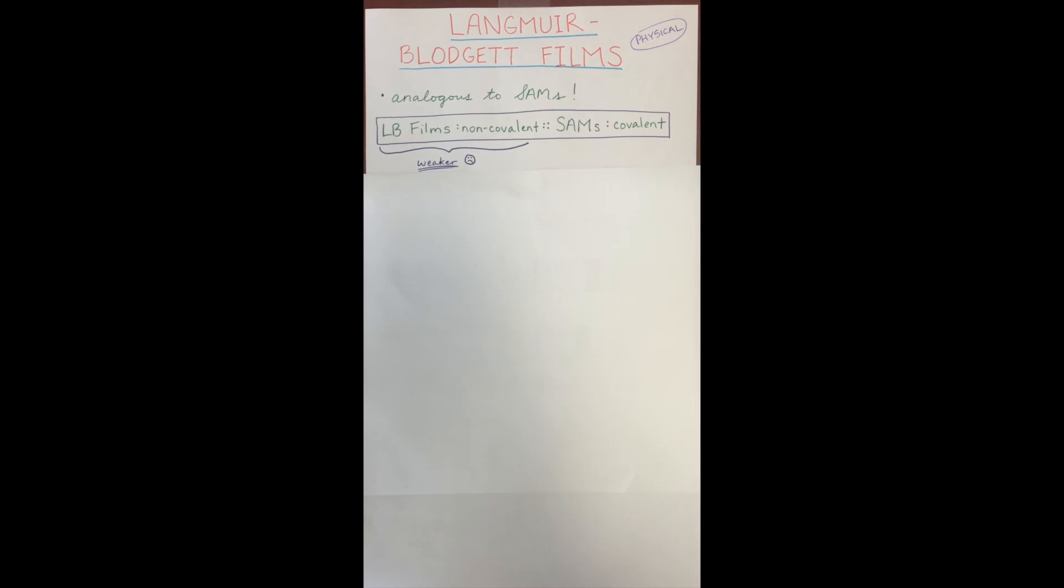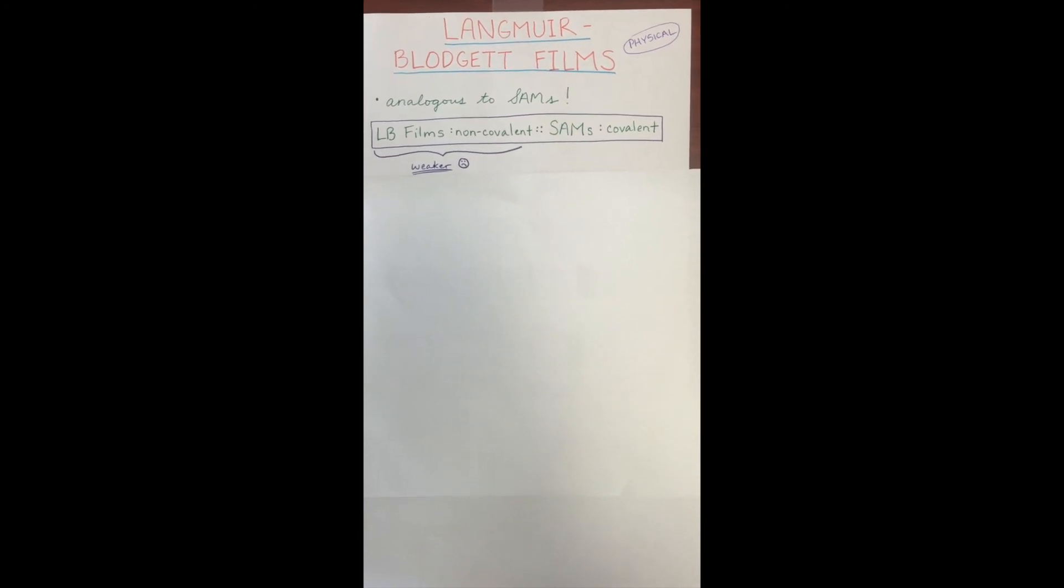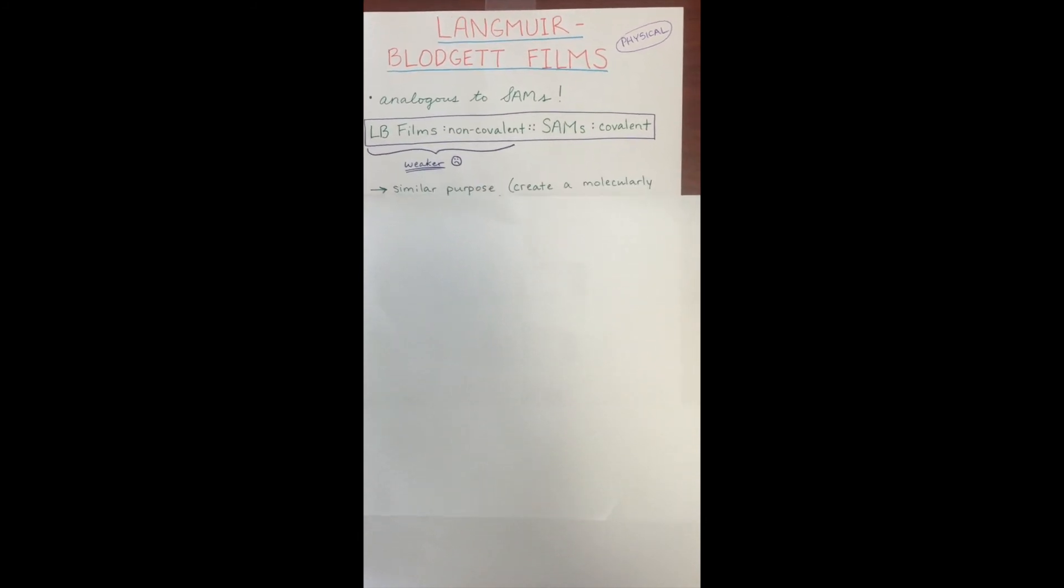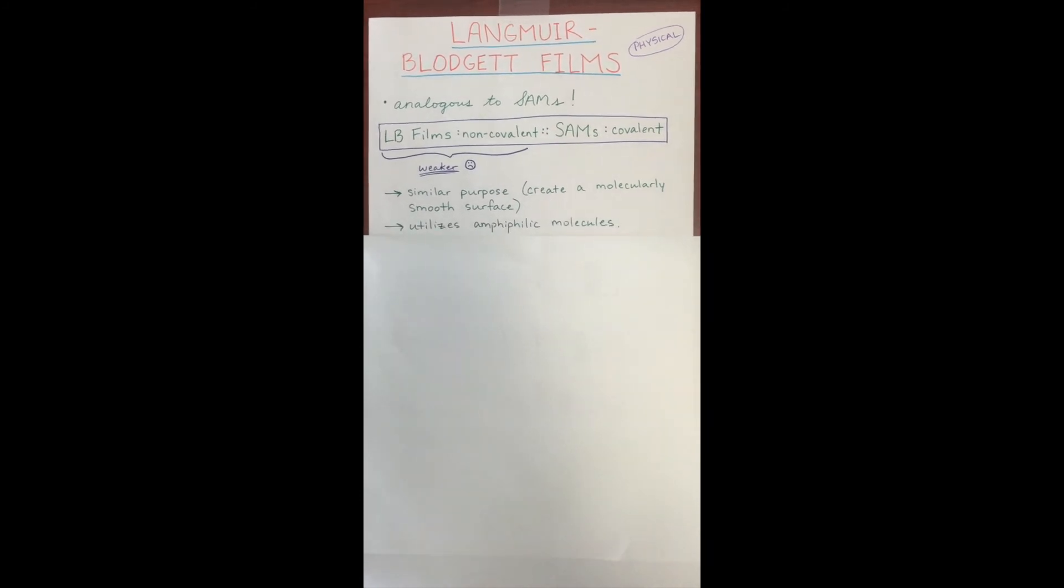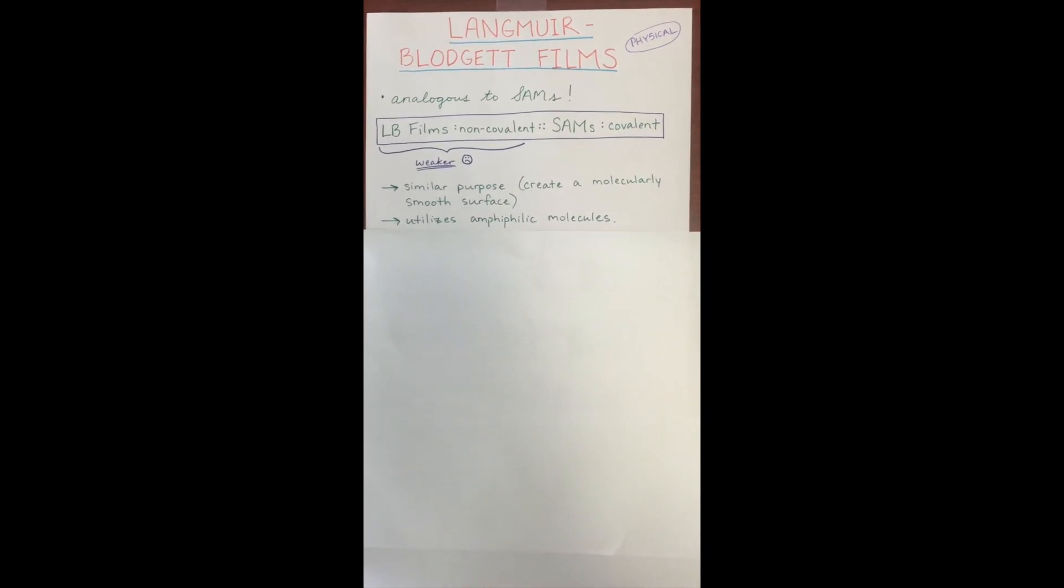Now let's talk about physical modifications, meaning these modifications are non-covalent. Our first physical modification is Langmuir Blodgett films. Langmuir Blodgett films are analogous to SAMs, but are weaker. Hence, the sad face. These films also can be used to create a molecularly smooth surface and are amphiphilic. Amph-what? Amphiphilic!